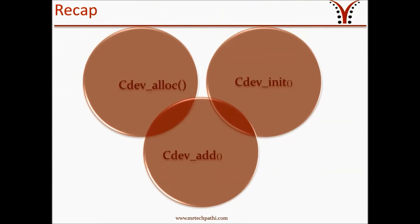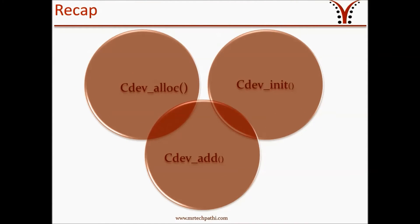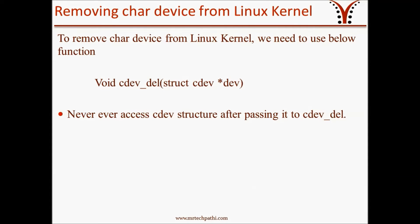To recap: the kernel provides two ways to allocate the cdev structure. One is using cdev_alloc to allocate the cdev structure at runtime. The other is using cdev_init to embed the cdev structure within a device-specific structure of your own. At the end, you use cdev_add to add your device to the Linux kernel. Now let's move to our second topic: removing a character device from the Linux kernel.